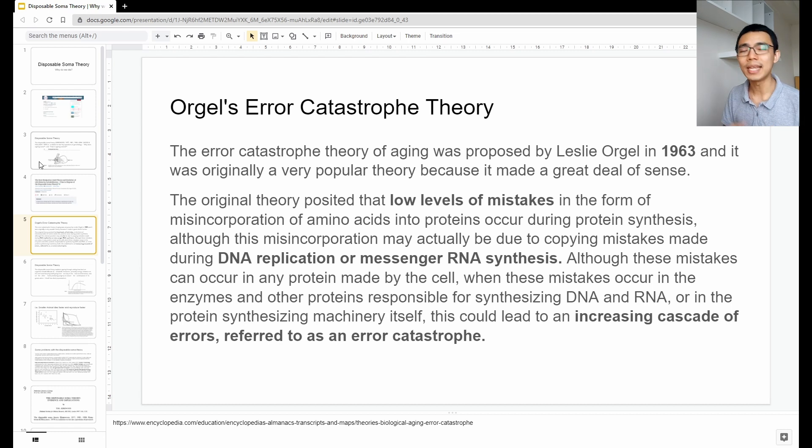So, every time you make a copy of DNA, something goes wrong. Every time you make a synthesis of mRNA, something goes wrong. And eventually, when you live longer and longer and longer, this mistake accumulates and accumulates and accumulates until one point, it cannot be repaired anymore and then you die.